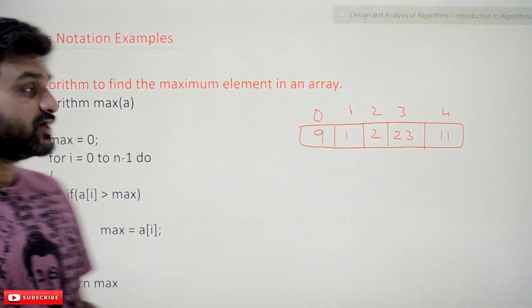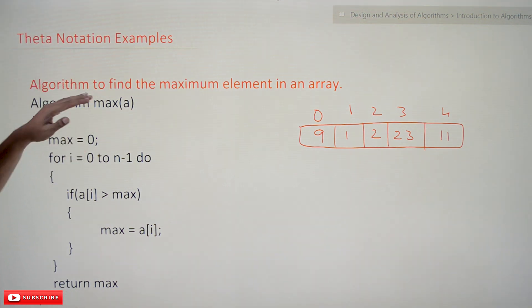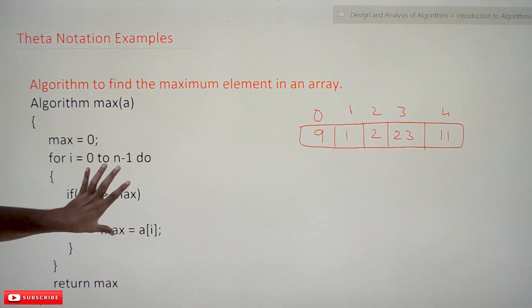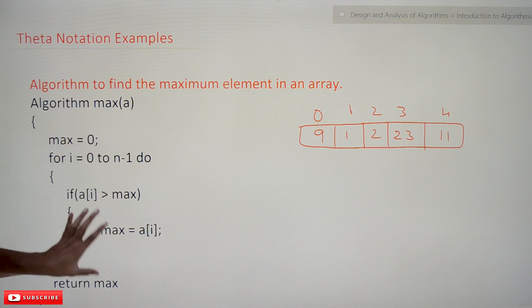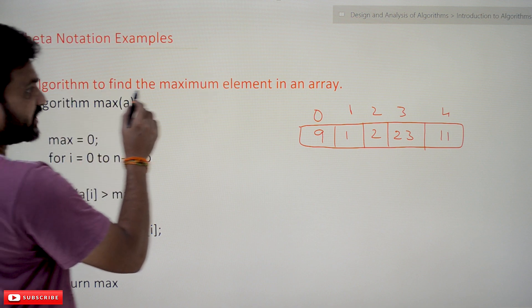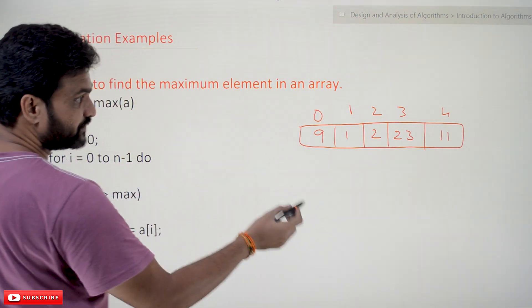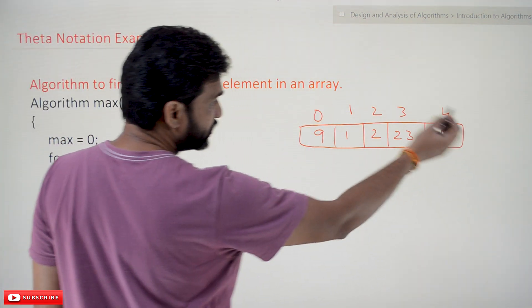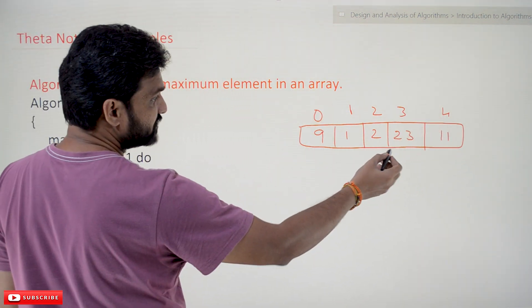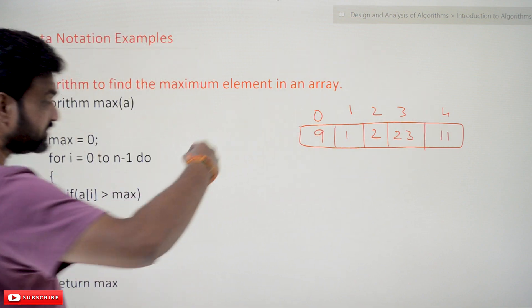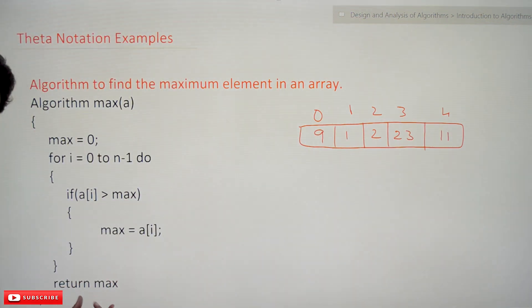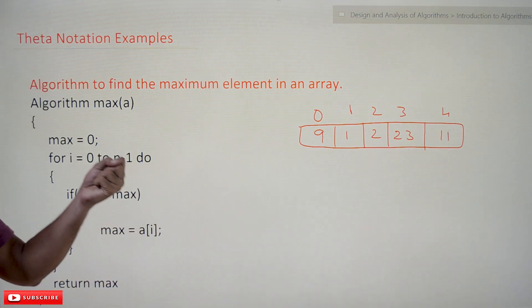In this class, we will take an example algorithm. This algorithm is to find the maximum element in an array. So given an array, we are going to find the maximum element. What is the maximum element? 23. 23 is going to be the value that is returned by this algorithm — it is going to return the maximum element.